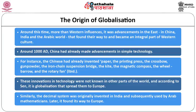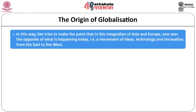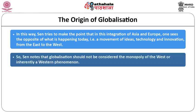Similarly, the decimal system was discovered by Arab scholars and made its way to Europe and other Asian nations. In this way, Sen tries to make the point that in this integration of Asia and Europe, one sees the opposite of what is happening today — a movement of ideas, technology, and innovation from east to west. Globalization should not be considered the monopoly of the West or inherently a Western phenomenon.